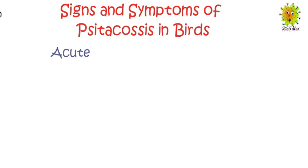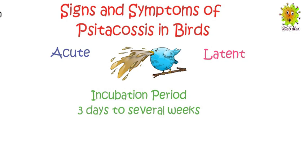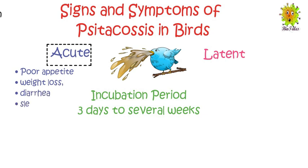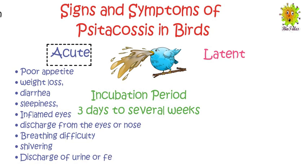Now let's talk about the signs and symptoms of psittacosis in birds. Psittacosis infection in birds can be acute or latent. The incubation period ranges from three days to several weeks. Some of the signs that appear in an infected bird include poor appetite, weight loss, diarrhea, sleepiness, inflamed eyes, discharge from eyes or nose, breathing difficulty, shivering, and discharge of urine or feces in various shades of green.